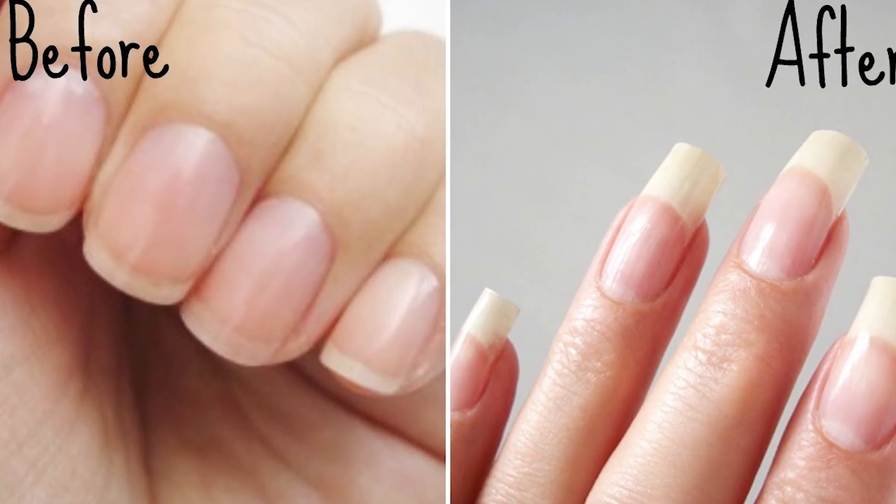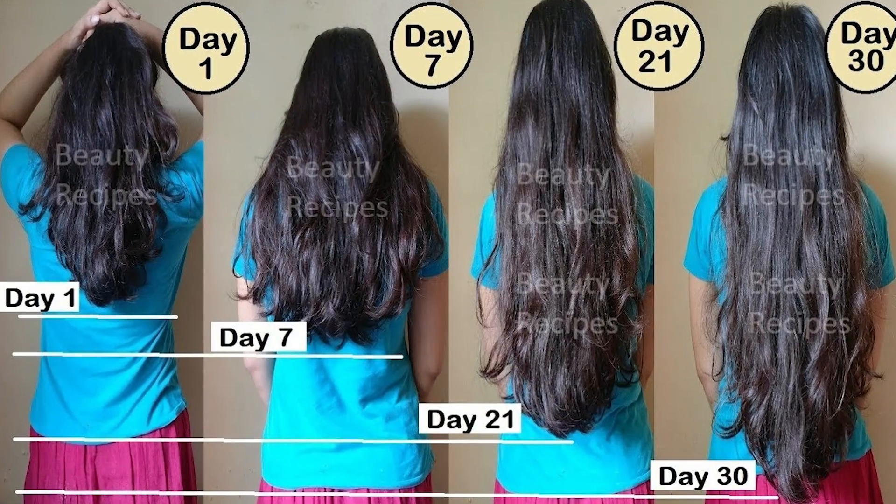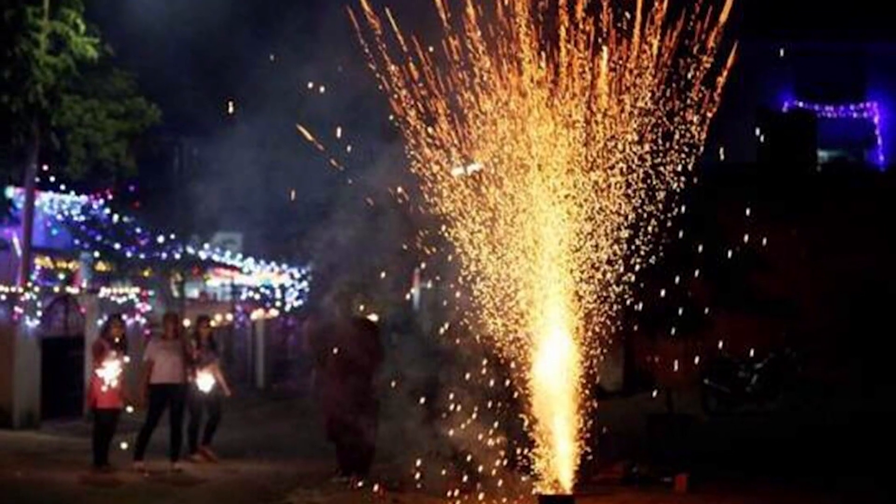There are different types of changes that occur around us. Some changes take place very quickly while others take days or even years. Some changes are temporary while some changes are permanent. Some changes produce new substances while others do not. Some changes are natural while others are made by human beings. Some changes are desirable to us but some are not desirable.